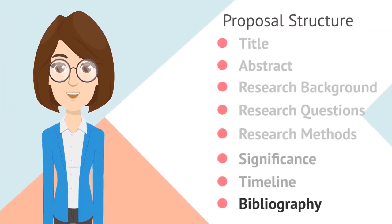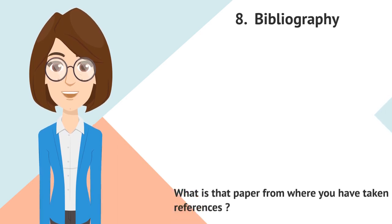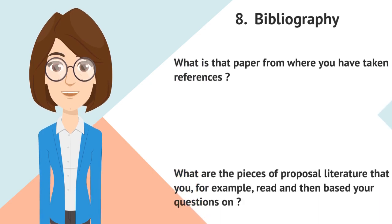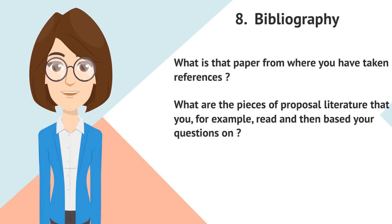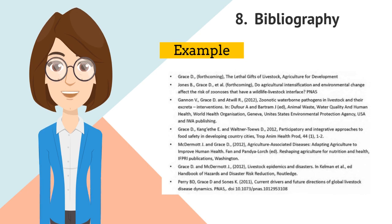The last section is Bibliography. Here you want to detail the key pieces of work and key literature that your work is based on — it includes all the sources you consulted in your research. What papers did you take references from? What proposal literature did you read and base your questions on? Where was the gap in what you read that you then thought to answer? Think about what papers a person new to your topic would need to read to understand the field and how your work adds to it. Remember that your supervisor will be an expert in the field, so make sure you have done enough reading to identify the most important papers.